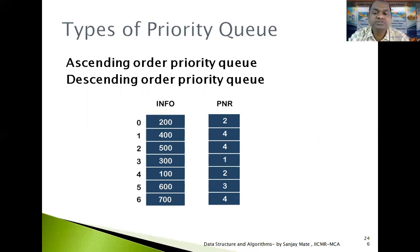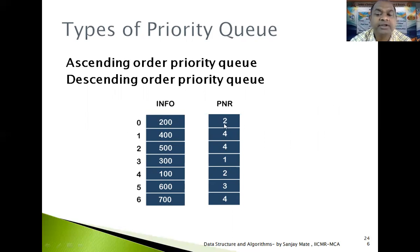In the queue we have inserted elements: 300, 400, 500, 600, and 700. Each element is having a priority. For 300 the priority is 1, for 400 the priority is 2, for 600 the priority is 3, and for 700 the priority is 4. These are the priorities associated with each particular element.